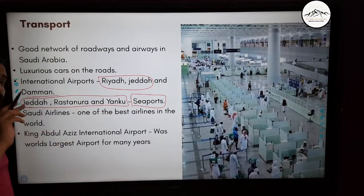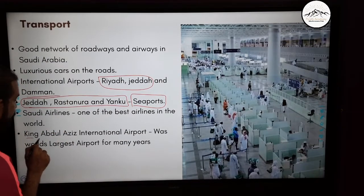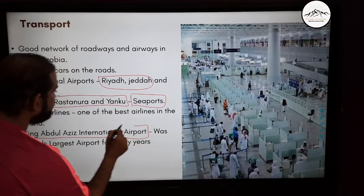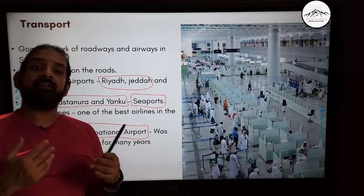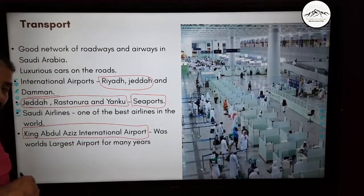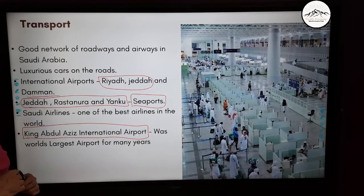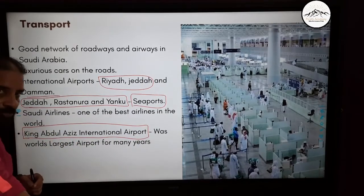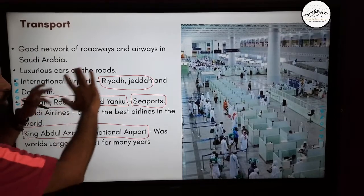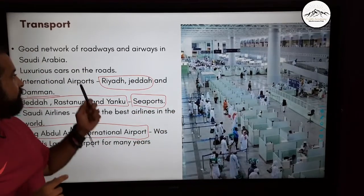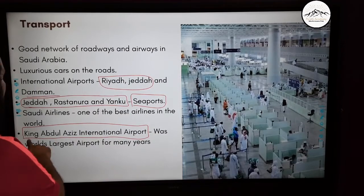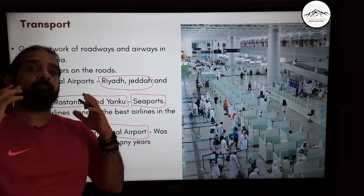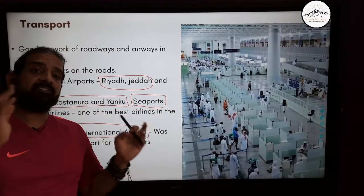The most important airport is King Abdul Aziz International Airport, which for a long time was the world's largest airport. King Abdul Aziz was one of their most important kings. So airports are at Riyadh, Jeddah, and Dammam, and the main seaports are at Jeddah, Ras Tanura, and Yanbu.